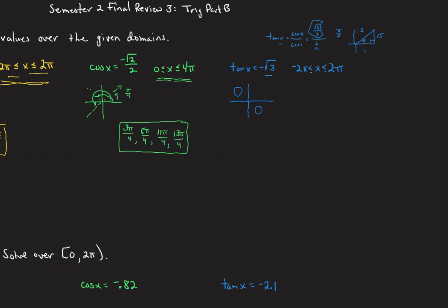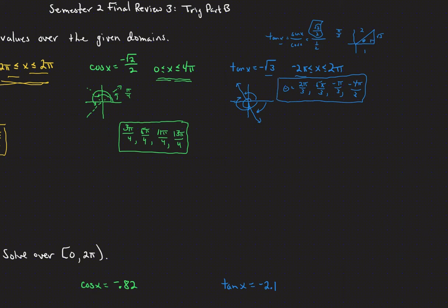With reference angle pi over 3, the quadrant 2 angle is 2 pi over 3 and the quadrant 4 angle is 5 pi over 3. Going in the negative direction from 0 to negative 2 pi, we get negative pi over 3 and negative 4 pi over 3. Those are our four angles where tangent is negative square root of 3.